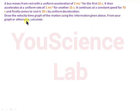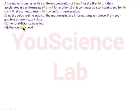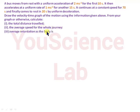From your graph or otherwise, calculate: 1) the total distance traveled, 2) the average speed for the whole journey, 3) average retardation as the body is brought to rest, 4) the maximum speed attained during the motion.